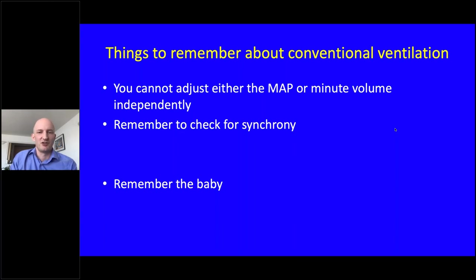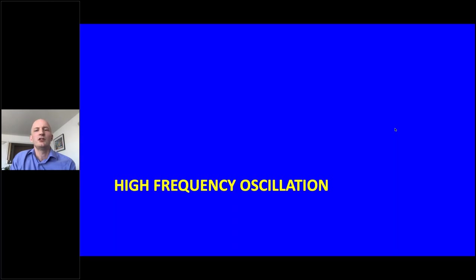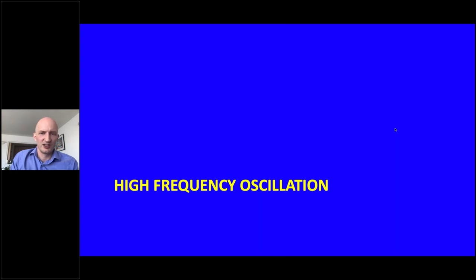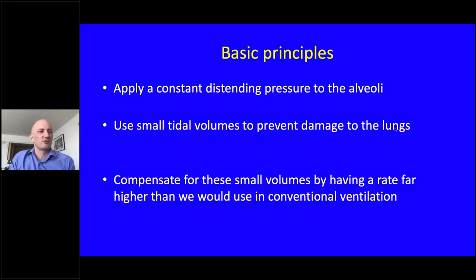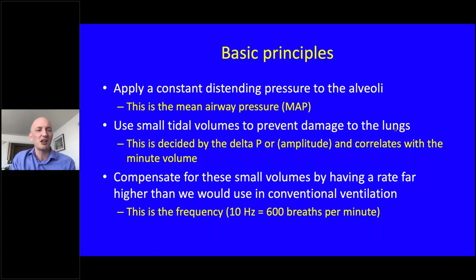Now let's look at high frequency ventilation. Once you understand mean airway pressure and minute volume, high frequency becomes much simpler. The basic principles: apply a constant distending pressure to the alveoli, use smaller tidal volumes to prevent lung damage, and compensate with a much higher rate than conventional ventilation. The constant distending pressure is the MAP; tidal volumes are determined by our delta P; frequency decides how many breaths compensate for the smaller volumes.